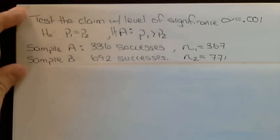Test the claim with level of significance alpha of .001. The null hypothesis is that the two population proportions are the same, and the alternative is that the first population proportion is larger than the second.